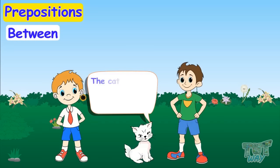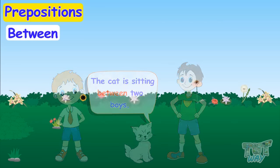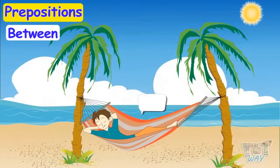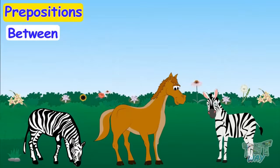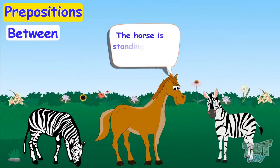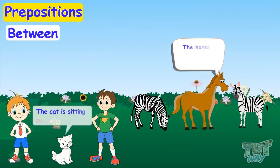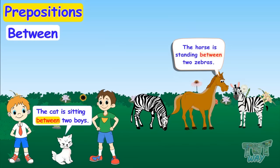The cat is sitting between two boys. The boy is sleeping between two trees. The horse is standing between two zebras. When something is in the center of two things or persons, we say 'between'.